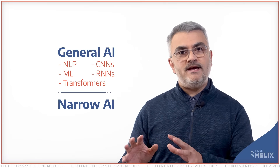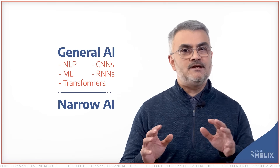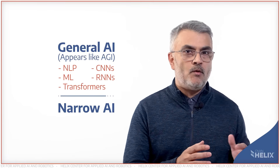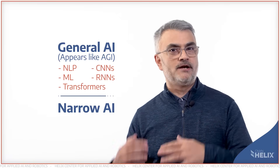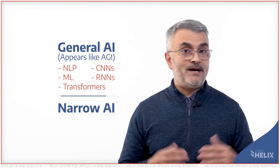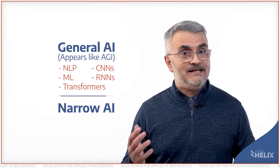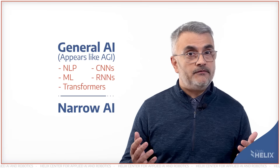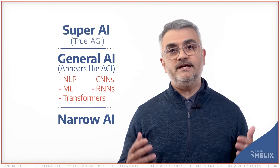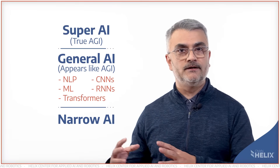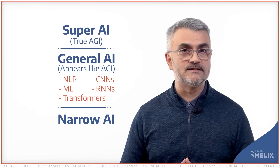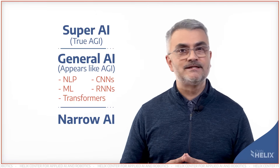So in some ways, these are systems and models that exhibit what we might call artificial general intelligence. Something we are still in pursuit of is this promise of what's called AGI, which is often referred to as this third area of super intelligent AI.